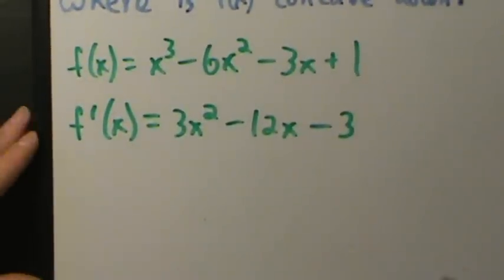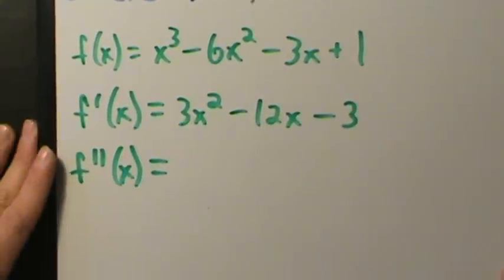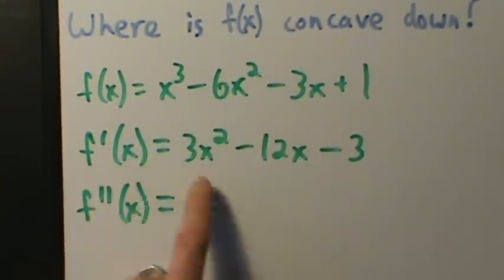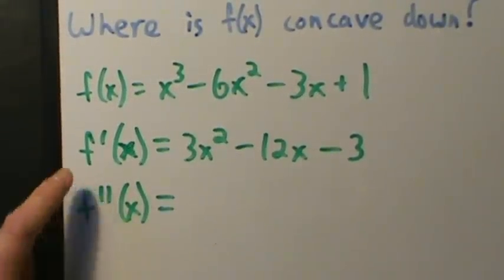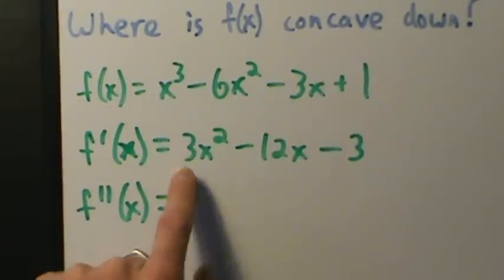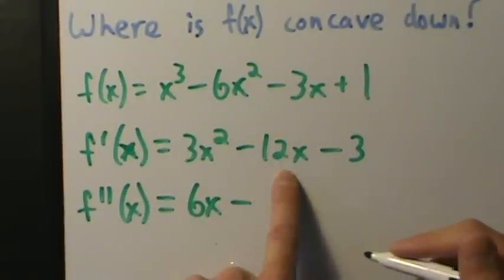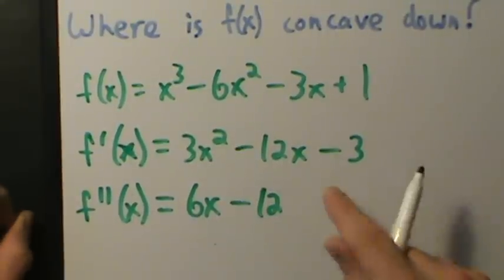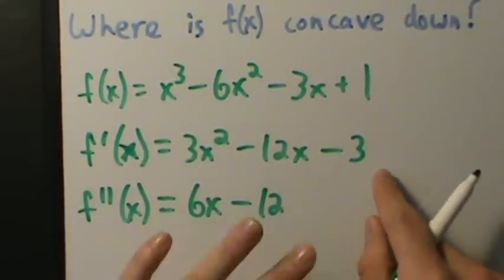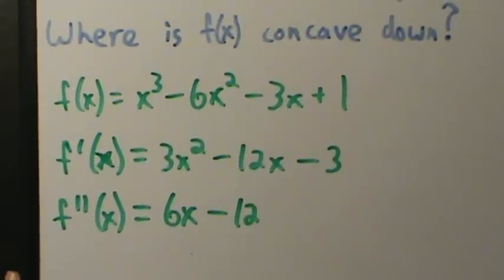Now for concavity we need the second derivative f''(x) — that's just the derivative of the first derivative. The derivative of 3x² is 6x, and the derivative of -12x is -12, and -3 is a constant so its derivative is 0. So f''(x) = 6x - 12.